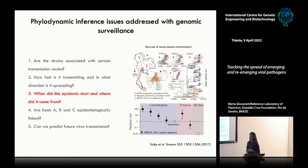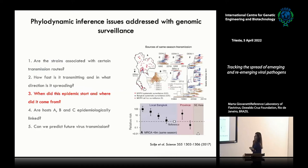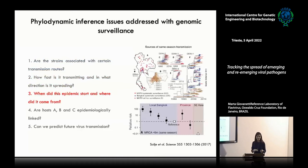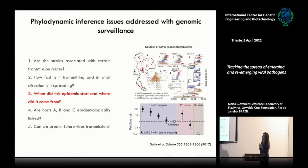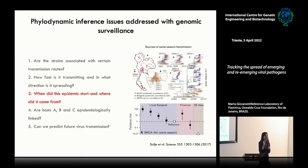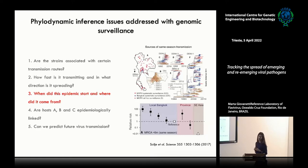Another important application is to try to determine where a specific epidemic likely started and where it came from. In this manuscript from Salje et al., published in Science, they reconstructed the epidemiological scenario in Thailand within 2016–2017, where they detected the co-circulation of several dengue serotypes. By combining genomic data with epidemiological as well as mobility data, they were able to identify that high-density population regions were also playing an important role in viral diversity.